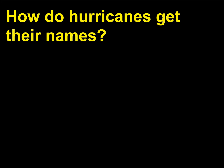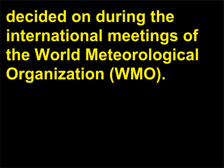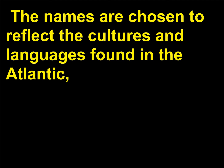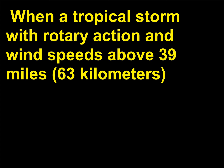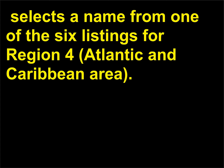How do hurricanes get their names? Since 1950, hurricane names have been officially selected from library sources and are decided on during the international meetings of the World Meteorological Organization, WMO. The names are chosen to reflect the cultures and languages found in the Atlantic, Caribbean, and Hawaiian regions. When a tropical storm with rotary action and wind speeds above 39 miles, 63 kilometers, per hour develops, the National Hurricane Center near Miami, Florida, selects a name from one of the six listings for Region 4, Atlantic and Caribbean area.